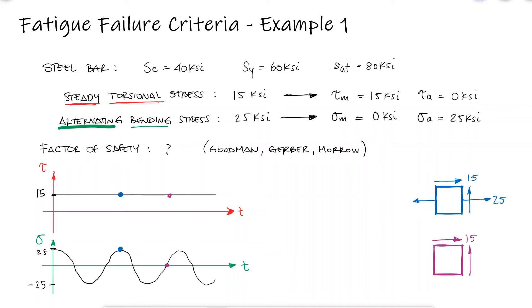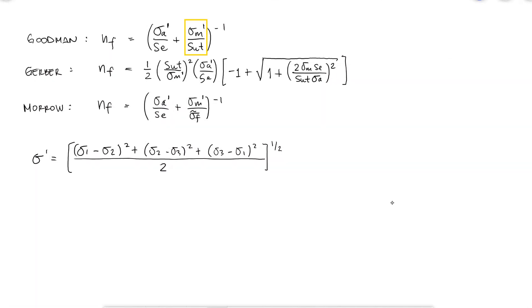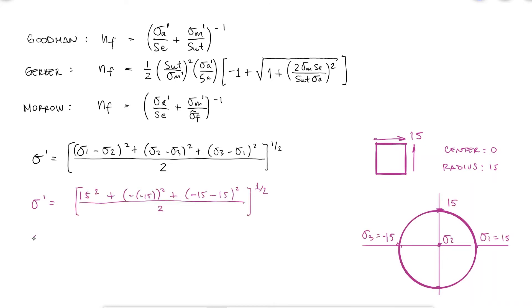We cannot, for example, compare a torsional mean stress of 15 ksi to the ultimate strength of the material in the Goodman equation for the factor of safety. Instead of the mean torsional stress, we have to compare the von Mises stress that results from the principal stresses that that torsional stress causes. We will later learn that the von Mises stress for a stress element that is subjected to one normal stress and one torsional stress is always equal to this expression. A link to that video is in the description below.